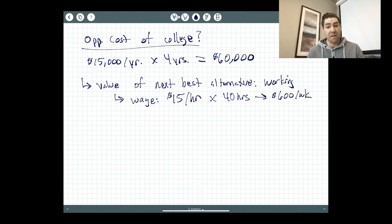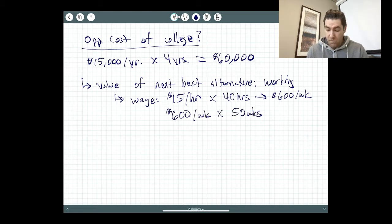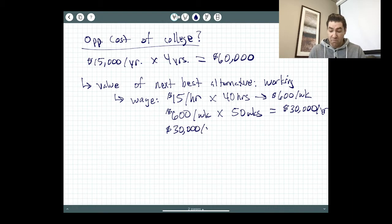So if I work 50 weeks out of the year, so give myself two weeks vacation, $600 per week times 50 weeks in the year, that's $30,000 that I would make per year.